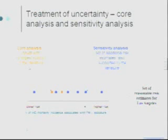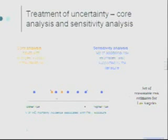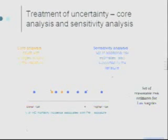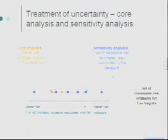We use those concentration response functions to estimate long-term mortality risk for a number of different health endpoints — that's our core estimate. If you imagine a series of risk estimates going from low risk to high risk, the two red dots represent the core risk estimates. The other set of estimates we generate comes from a sensitivity analysis, using additional epidemiology studies from which we extract concentration response functions to generate an additional set of risk estimates.